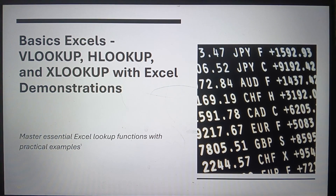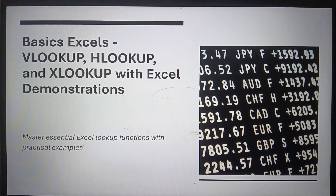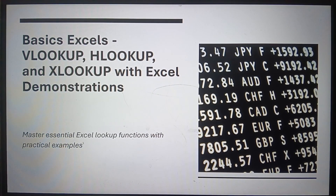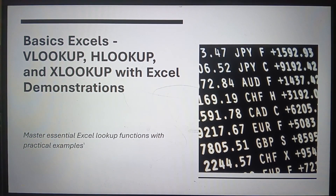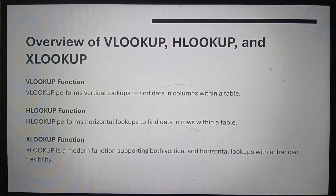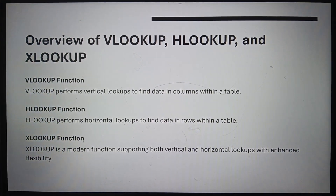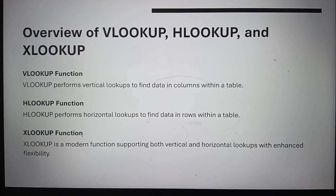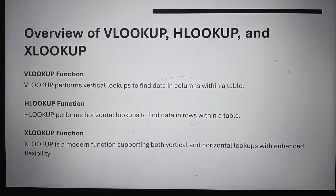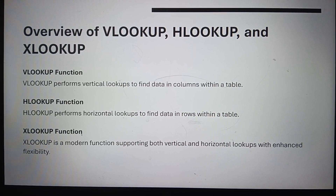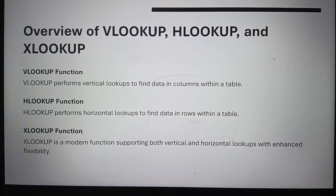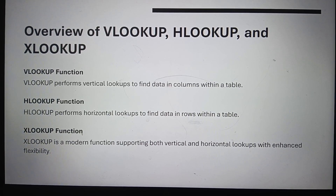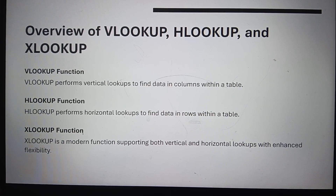Dear student, let's learn today one very important Excel functions: VLOOKUP, HLOOKUP, and XLOOKUP. VLOOKUP performs a vertical lookup to find data in columns within a table. HLOOKUP performs a horizontal lookup to find data in rows within a table. XLOOKUP is a modern function supporting both vertical and horizontal lookups with enhanced flexibility.